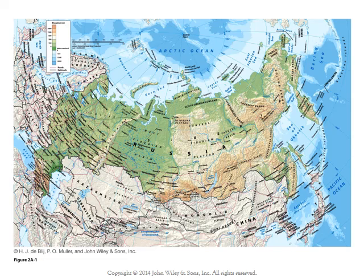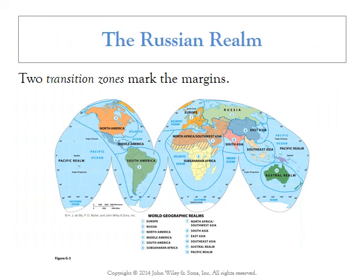The first thing we're going to talk about is the physiography — the physical geography of Russia. Russia is really huge, and it's also varied in terrain. This is a topographic map showing Russia's topography. The green areas are around sea level, showing large plains, but we also have mountainous terrain. The Ural Mountains divide the far western part of Russia from the eastern sections, and farther east we get into the Central Siberian Plateau and then mountainous terrain in far eastern Russia.